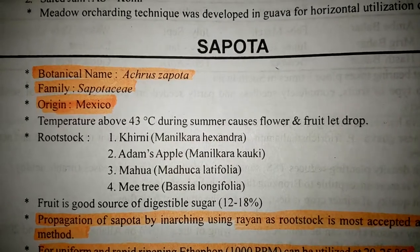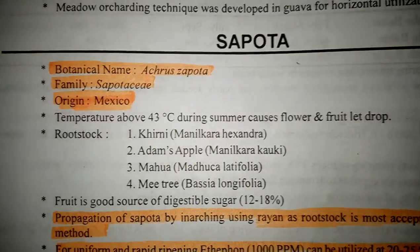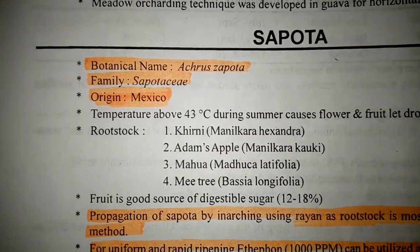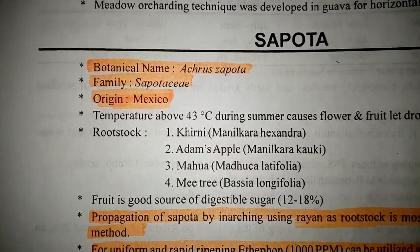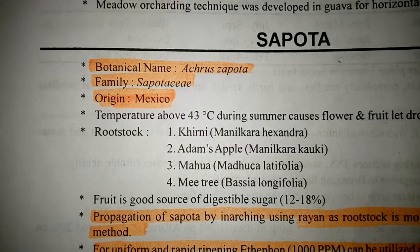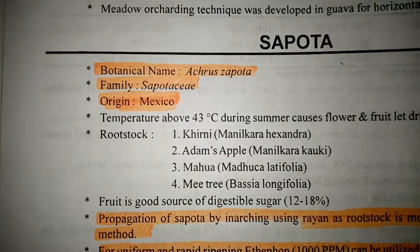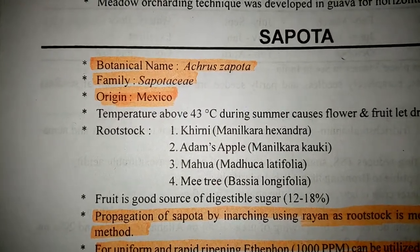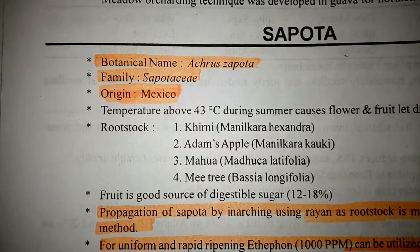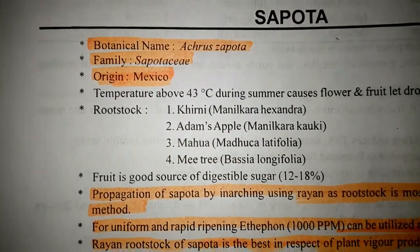Today we are going to talk about Sapota. The botanical name of Sapota is Achras sapota, family Sapotaceae, origin from Mexico.